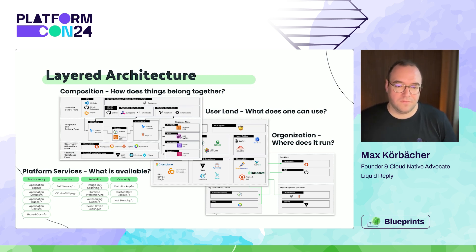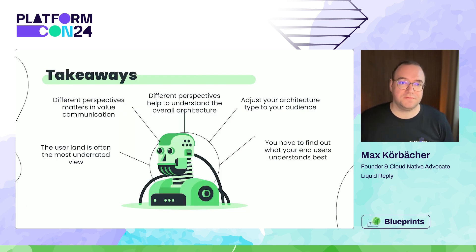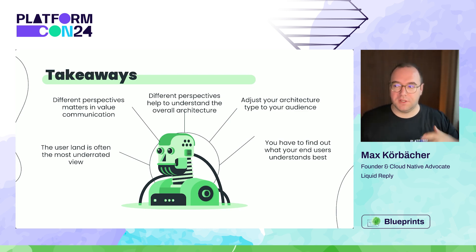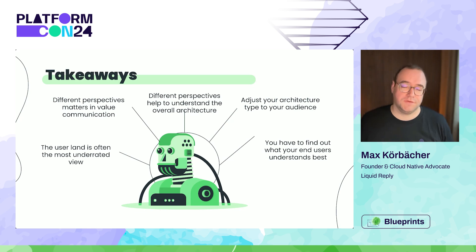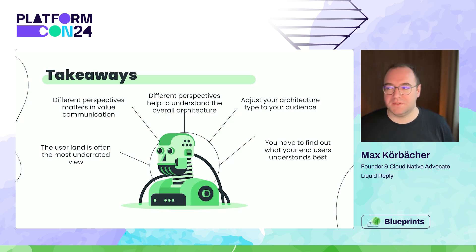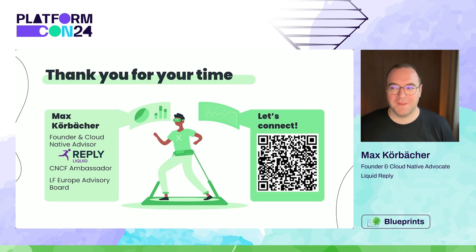The takeaways for today: the user land is the most underrated view — it's a very technical view we usually overlook. The different perspectives matter for communication value and also help to understand the overall architecture by connecting the dots. Adjusting your architecture type for your audience is important — if you communicate to a business asking why something takes so long to implement, it's helpful to show all the features you've built. And last but not least, find out what end users best understand when you communicate with them. I hope these layers help you — thank you for your time, have a great day!